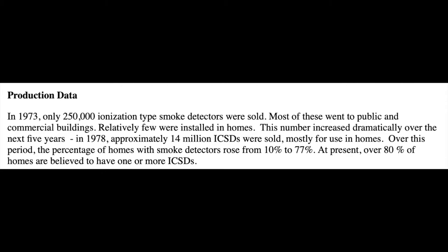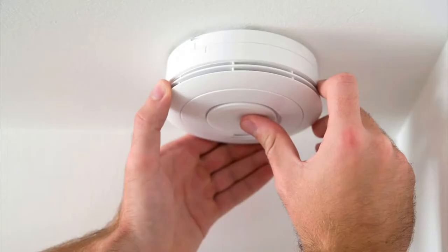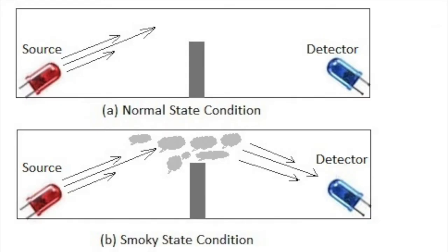Americium-241 is a common byproduct in nuclear reactors, not made directly from uranium, but from plutonium. It is important to note that not all alarms are ionizing alarms, the ones that contain the radioactive material. Some are photoelectric and do not contain any Americium.